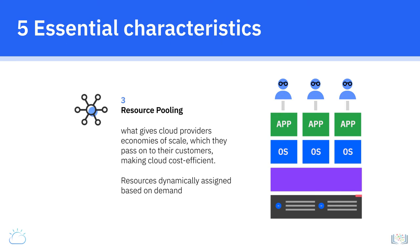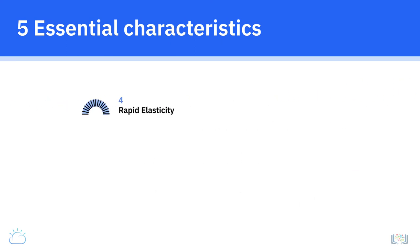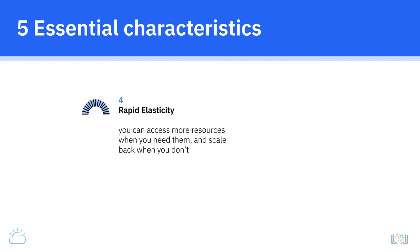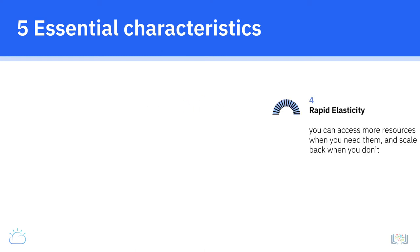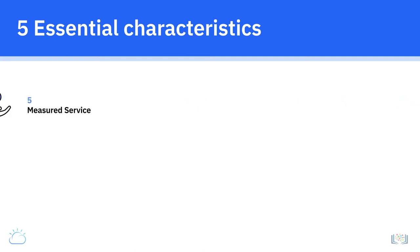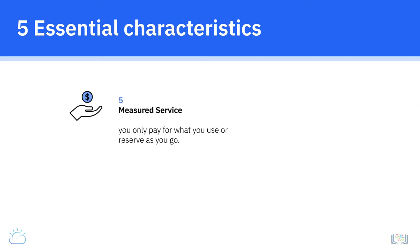Rapid elasticity, the fourth characteristic, implies that you can access more resources when you need them and scale back when you don't, because resources are elastically provisioned and released. The fifth characteristic, measured service, means that you only pay for what you use or reserve as you go — if you're not using resources, you're not paying.